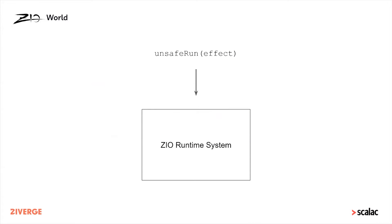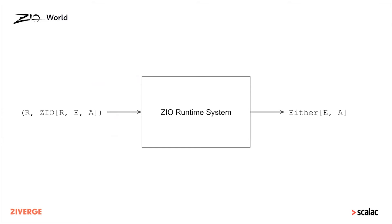When you call a method like unsafeRun, that effect is passed to the ZIO runtime system, and the ZIO runtime system is in charge of stepping through all these different instructions and executing them. You can think of the ZIO runtime system as a black box: you feed it an environment together with a ZIO effect that requires that environment, and get out either an E or an A. This is how you execute a concurrent blueprint.